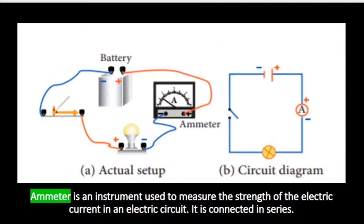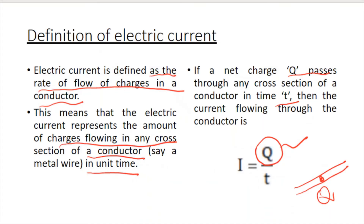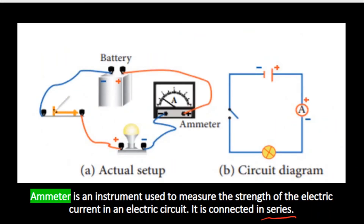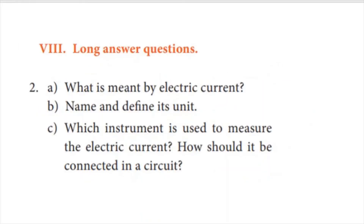Which instrument is used to measure the current? Ammeter is the instrument used to measure the strength of electric current. Ammeter is always connected in series in the circuit. You have already studied series and parallel circuits. So, in summary: the definition of electric current, the SI unit of electric current, and the measurement of electric current using ammeter connected in series.